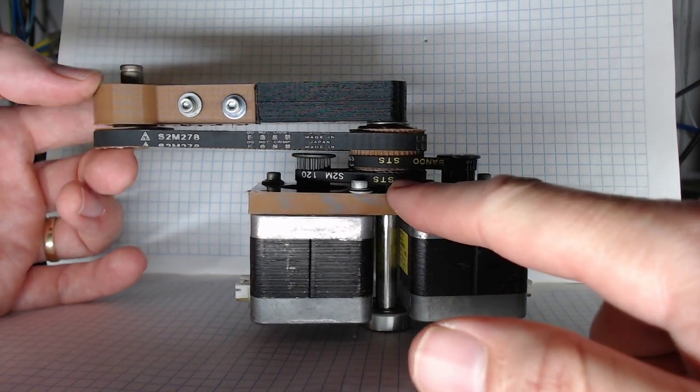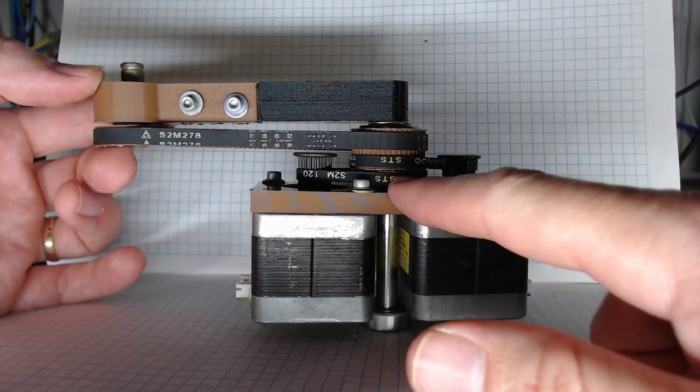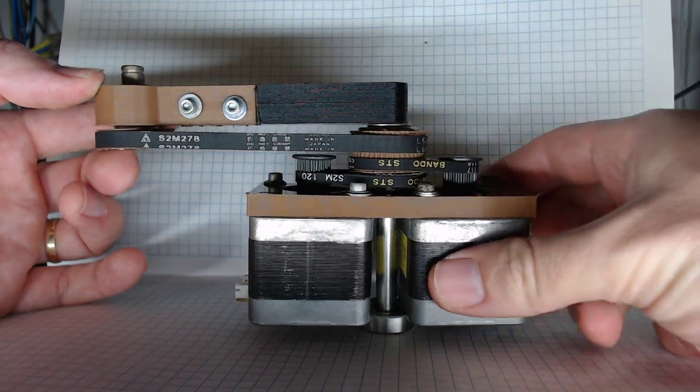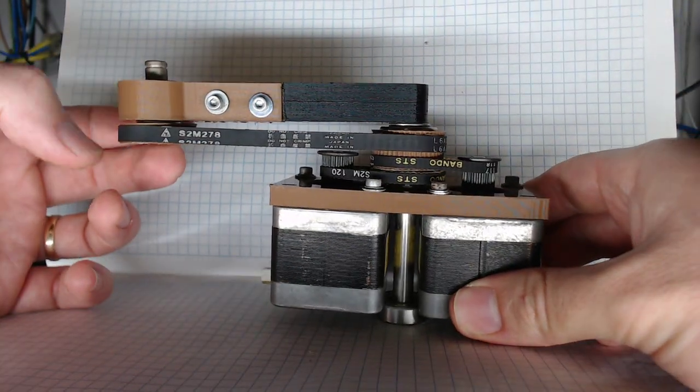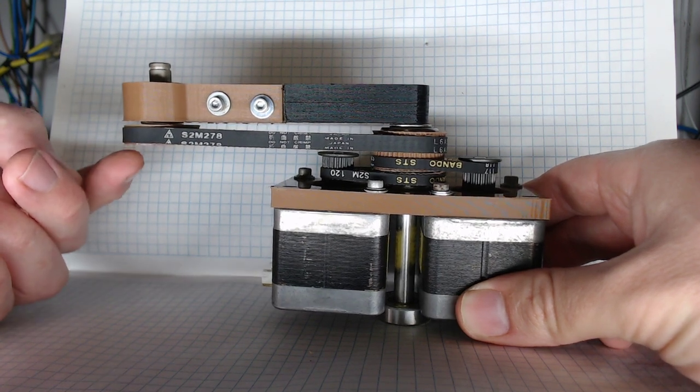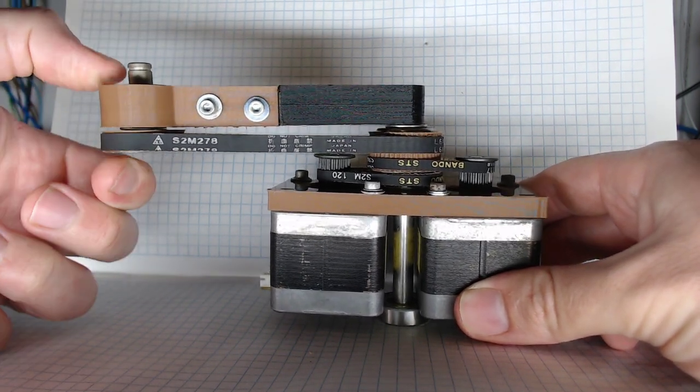So the shaft 1 drive pulley is pinned to that shaft, and arm 1 is pinned to that shaft as well. You can see there's a pin in there. And this shaft 2 driven pulley will be pinned to the shaft as well. It's not currently.